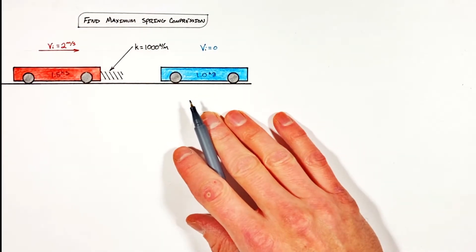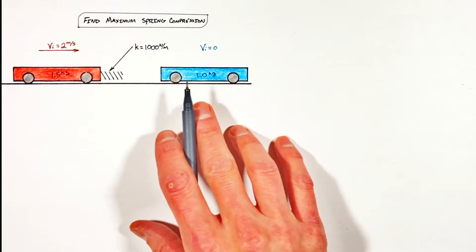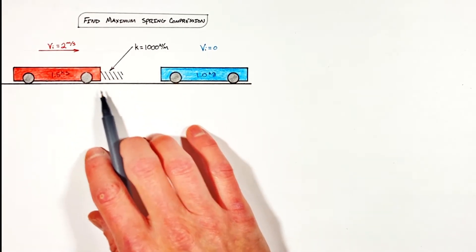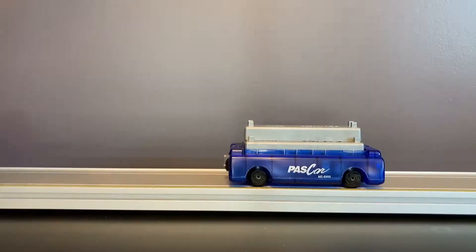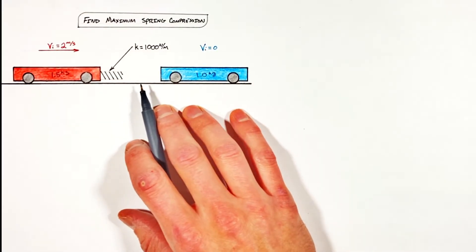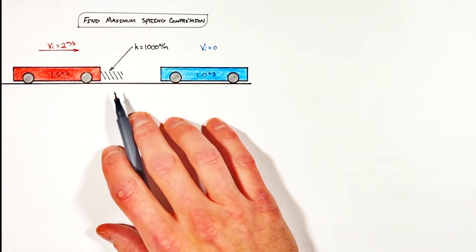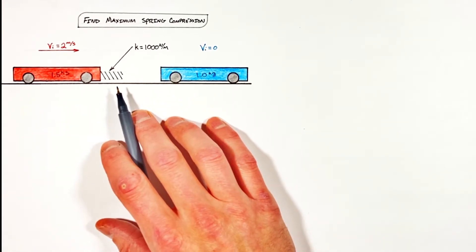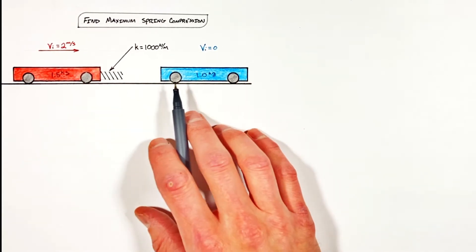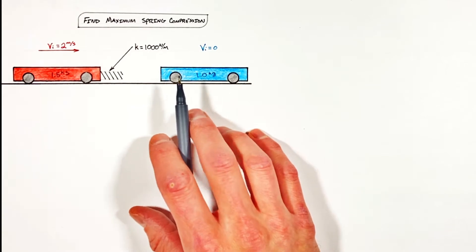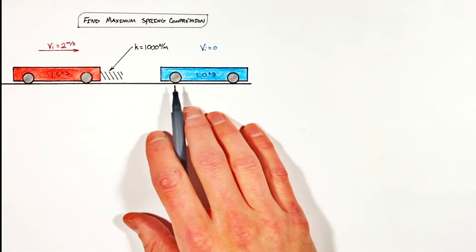Today we're talking about one of my absolute favorite problems in all of linear momentum. In this problem we're going to solve for the maximum compression of this spring as the two carts collide. This problem is really popular in just about every physics text because the math is really simple, but the concepts at work in this collision really get at the essence or the guts of linear momentum.